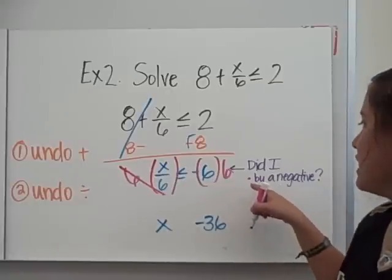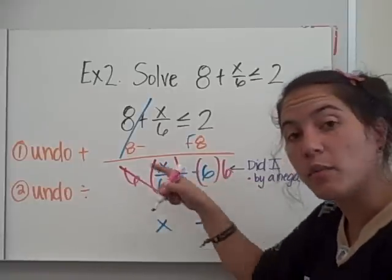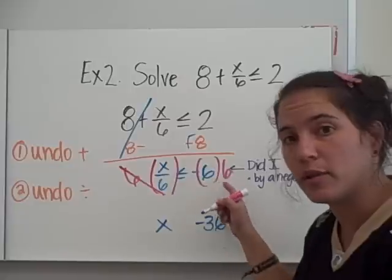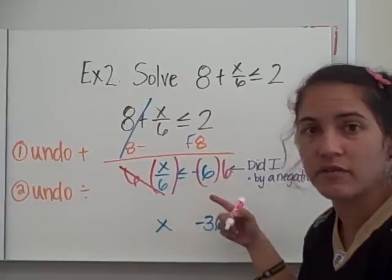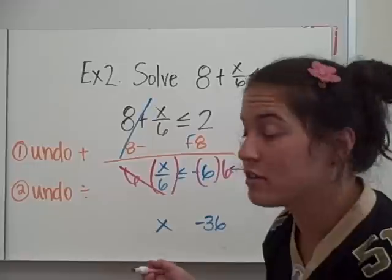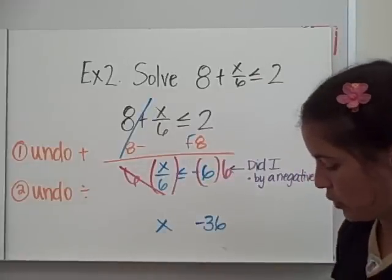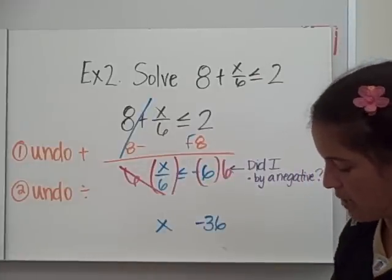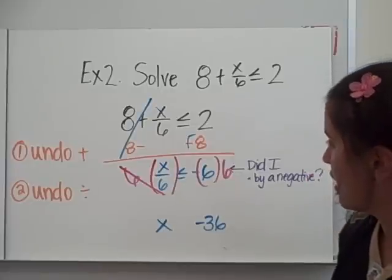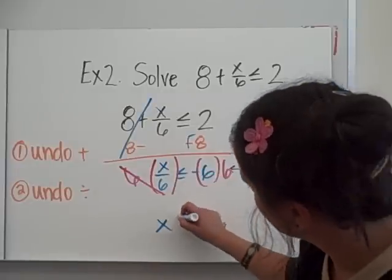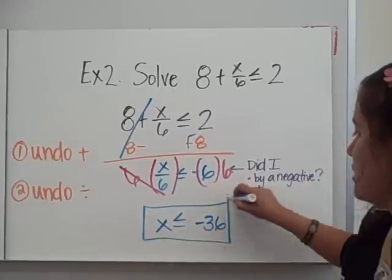And now my question is: did I multiply by a negative? What did I multiply by on both sides? I multiplied both sides by 6. Is that a negative? No. So I do not switch my symbol — my inequality symbol is going to remain the same. And my solution is x is less than or equal to negative 36.